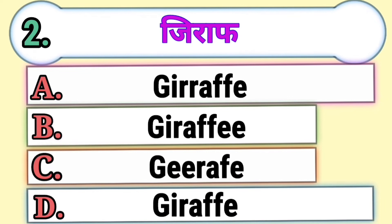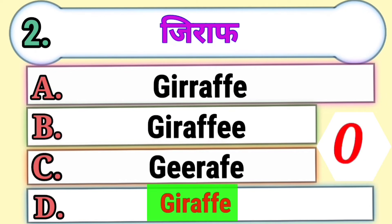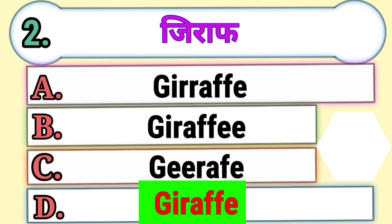Question 2. Giraffe — which of these is the correctly spelled word? Option A, Option B, Option C, or Option D. The correct answer is Option D, Giraffe.